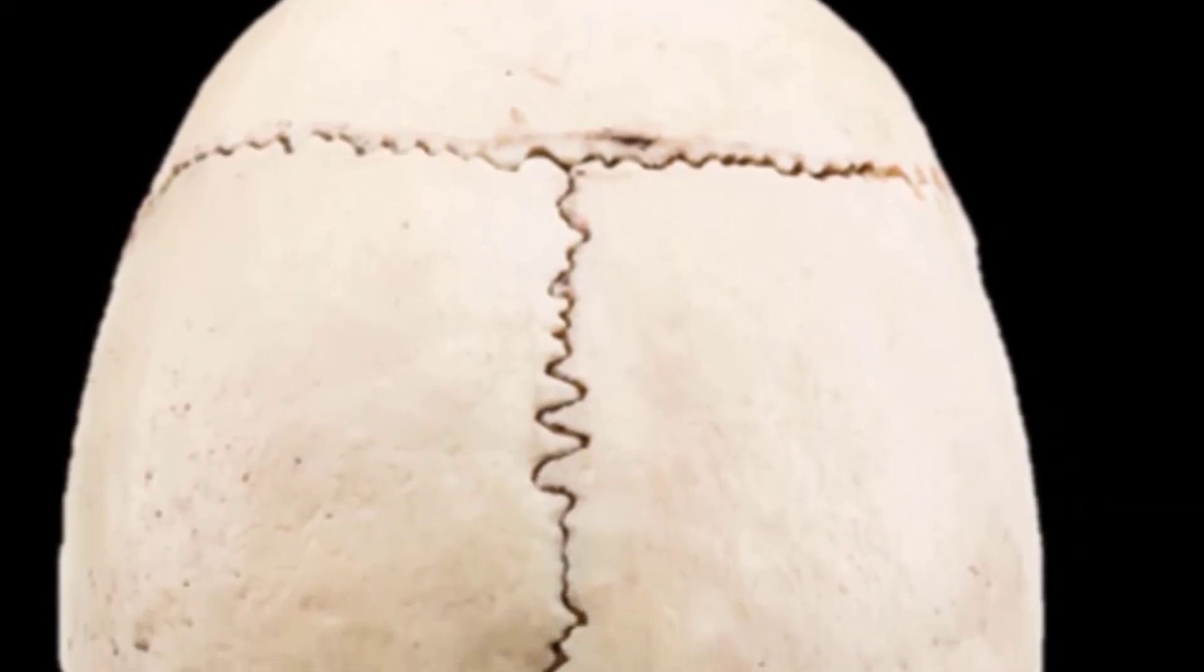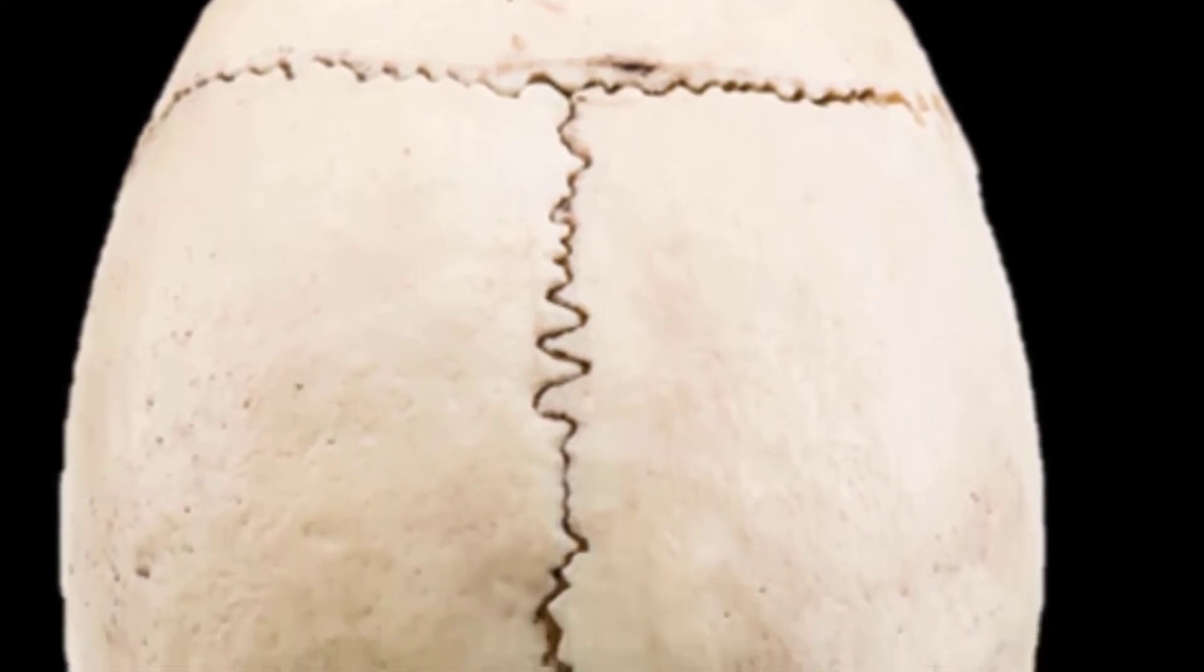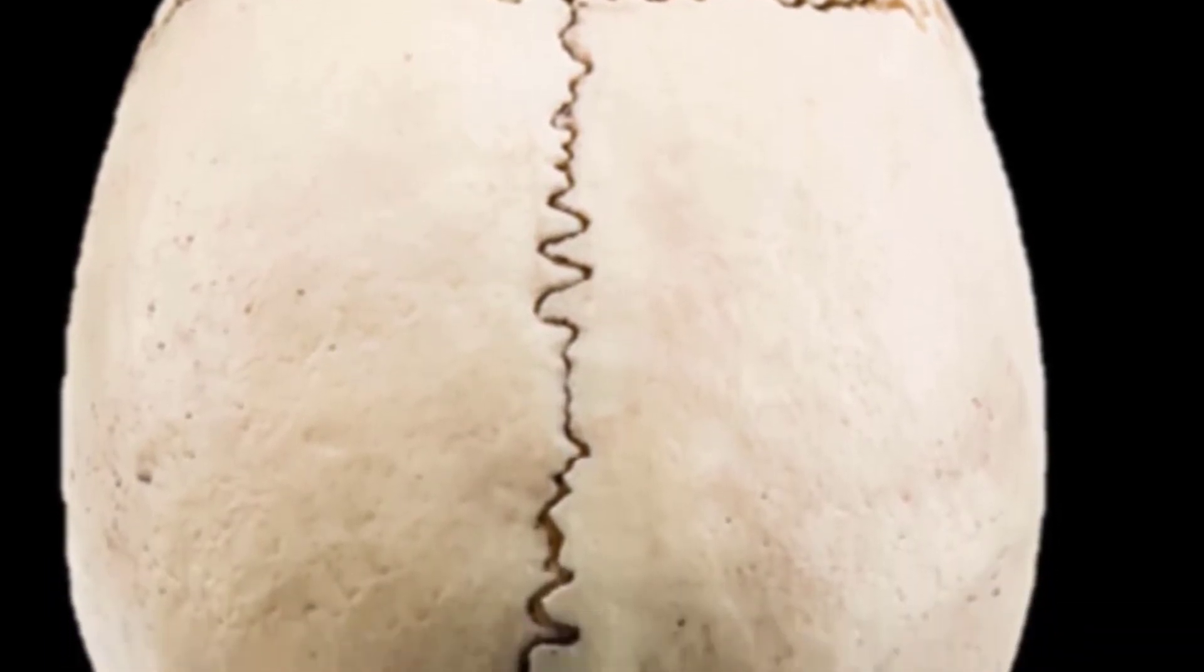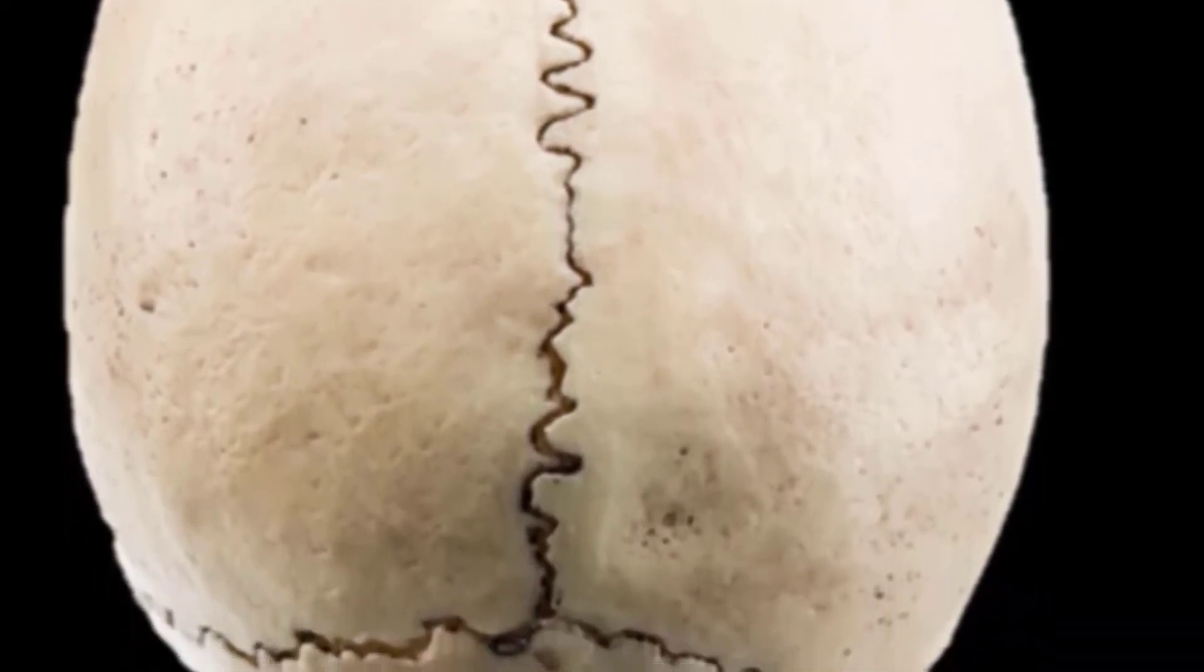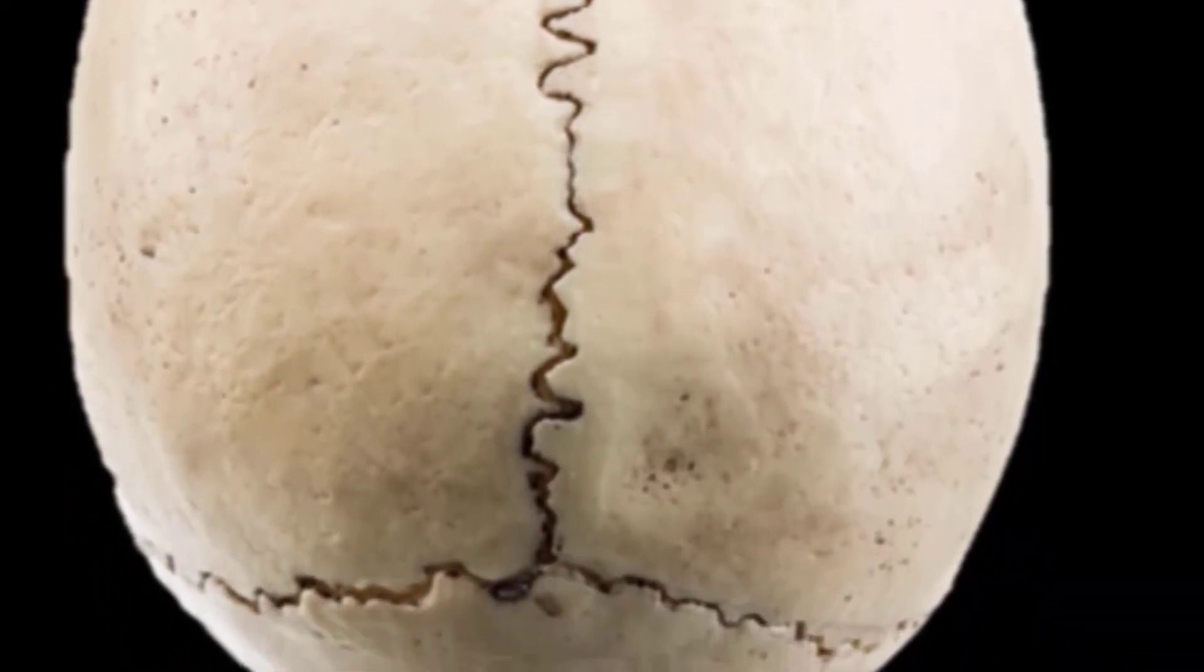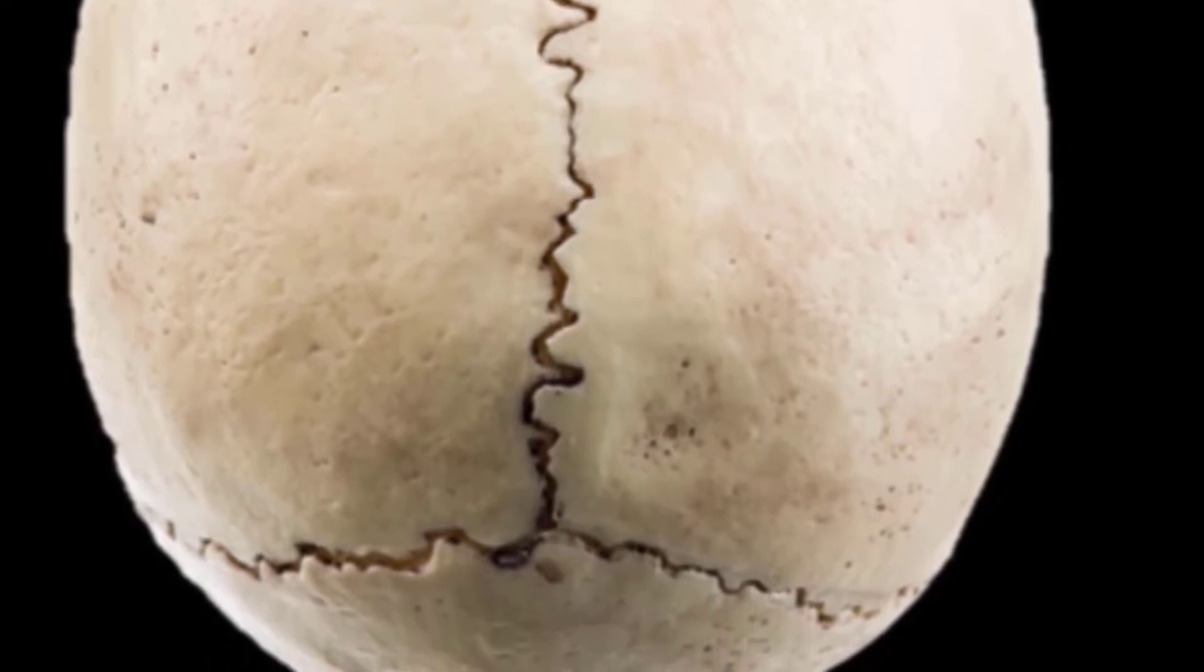The long sutures located between the bones of the brain case are not straight, but instead follow irregular tightly twisting paths. These twisting lines serve to tightly interlock the adjacent bones together, thus adding strength to the skull for brain protection.